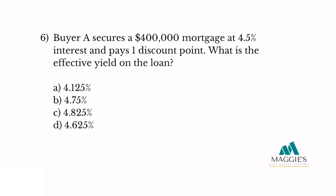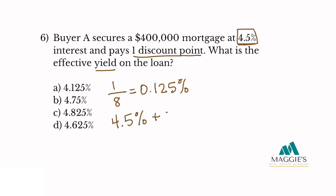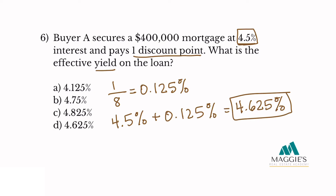Number six. Buyer A secures a $400,000 mortgage at 4.5% interest and pays one discount point. What is the effective yield on the loan? We have the keyword yield, so take the discount point and divide by eight: 1/8 equals 0.125%. Add to the interest rate: 4.5% plus 0.125% equals 4.625%. The answer is D.